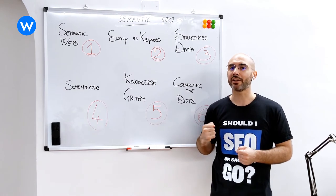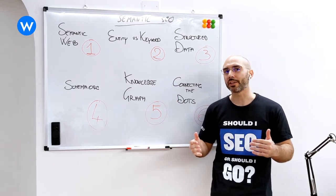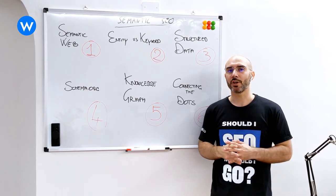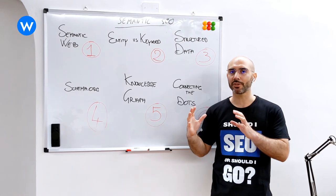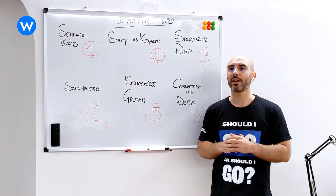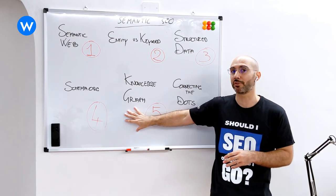So one payoff of the knowledge graph is that you actually get organic traffic and advanced features from Google, like featured snippet, from your content. But other advantages are the fact that you can actually extract very important data from your content, and you can create also an internal navigation within your site. So there are many applications for knowledge graphs.